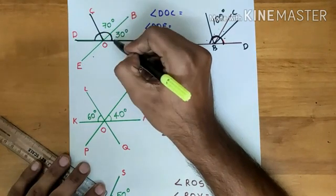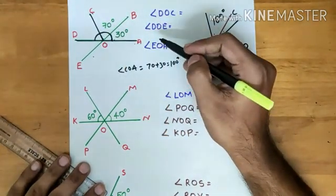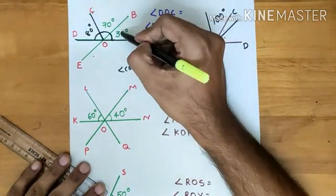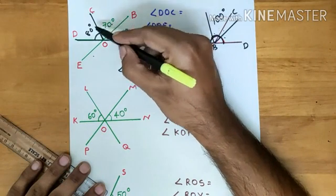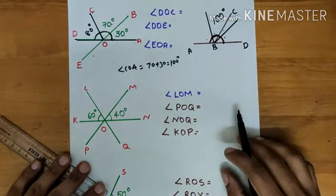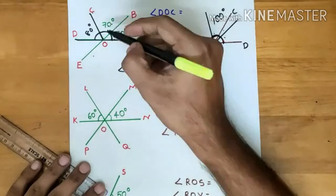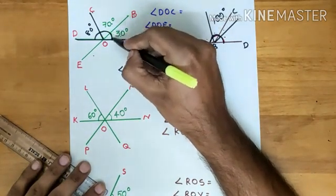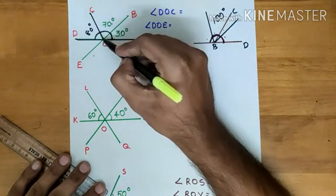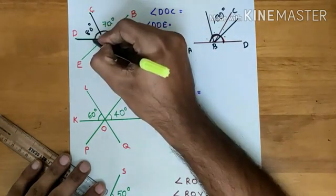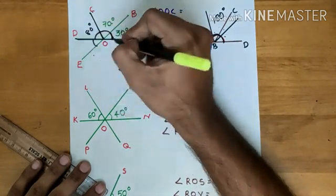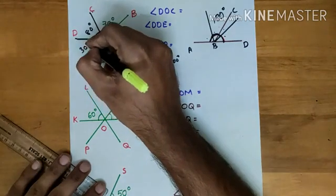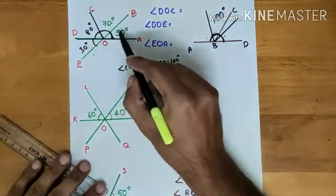The total sum is 180 degrees. So 30 plus 70 is 100, and this must be 80 degrees. So 100 plus 80 equals 180 degrees. Now, it is given angle BOA is 30 degrees. What is the opposite angle to BOA? It is DOE. Opposite angles are always equal, so DOE must also be 30 degrees.